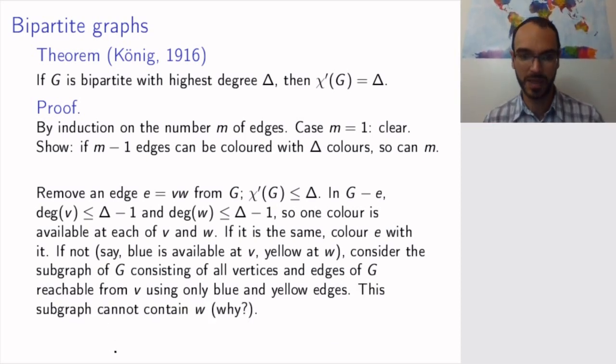Why is that? Well, if you have your vertex v here and your vertex w here, blue is available at v, meaning there is no blue edge at v, but yellow is not available because we're assuming that there is not the same color available at both v and w. So you start with a yellow edge, and then you come to some vertex.